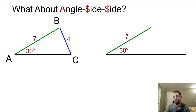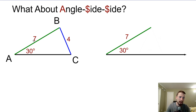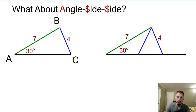So angle-side-side doesn't work. We're going to dive into why it doesn't work, and the one time that it does — which is when we have the hypotenuse-leg theorem with a right triangle. Let's say we have a 30-degree angle here, this side is 7, and this side is 4. So we have an angle, a side, and a side.